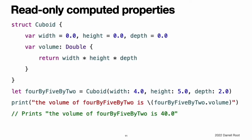Read-only computed properties: a computed property with a getter but no setter is known as a read-only computed property. It always returns a value and can be accessed through dot syntax but cannot be set to a different value. Note: you must declare computed properties, including read-only computed properties, with the var keyword because their value is not fixed. The let keyword is only used for constant properties. You can simplify the declaration of a read-only computed property by removing the get keyword and its braces.